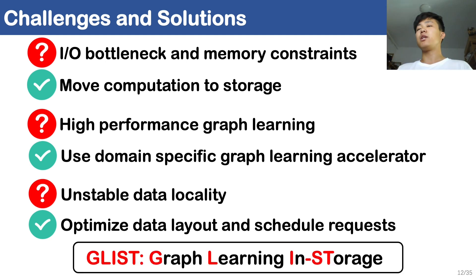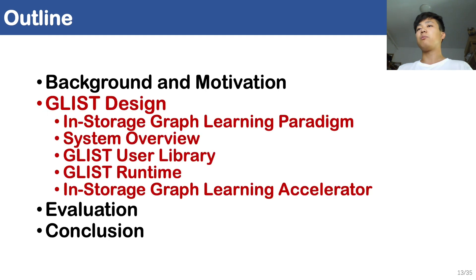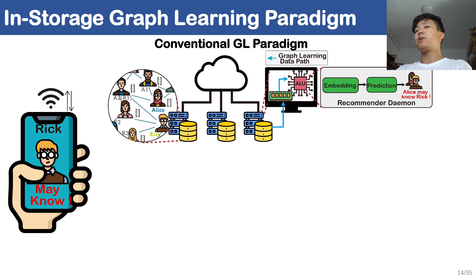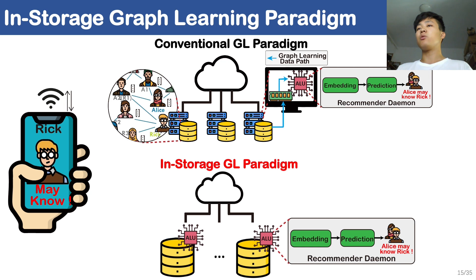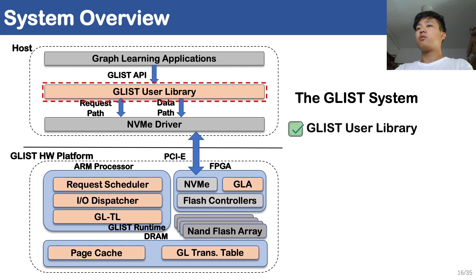In this work, we propose GLIST, an in-storage graph learning system. Still taking the recommender system as an example, to obtain recommendation choices, a huge amount of data has to be moved across both the hardware stack and software stack in the conventional graph learning paradigm, resulting in inefficiency. In-storage graph learning, however, moves the graph learning workload to the storage devices, thus removing the I/O bottleneck. This is the diagram of the proposed in-storage graph learning system, GLIST.